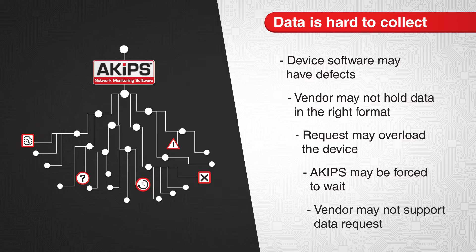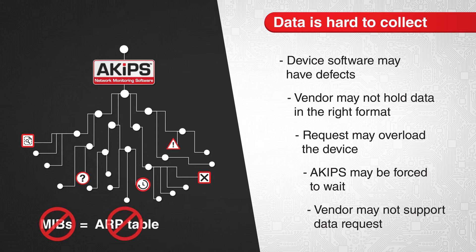One leading vendor, for example, doesn't support mandatory standard MIBs. Without an IP MIB, ACIP's can't retrieve an ARP table, and without an ARP table, Switchport Mapper can't map an IP to its MAC address.